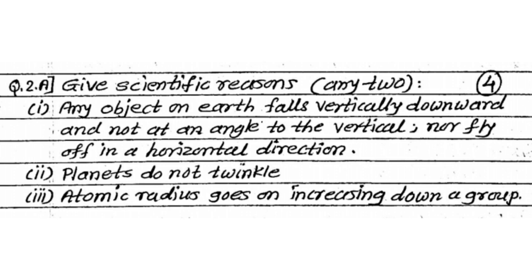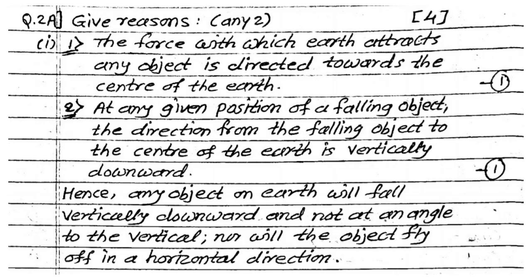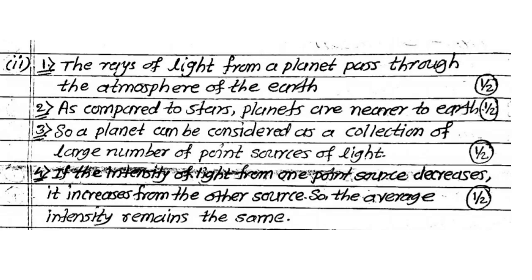Now question number 2, give scientific reason. 3 options are given and you write any 2. You write the answer point wise. Question number 2A is for 4 marks out of 3 options, you write any 2. For example, first give reason is given here. That 2 points are written here. You are getting 1 mark for each point. Like first point is the force with which earth attracts every object is directed towards the center of the earth. And second point also related to our answer.